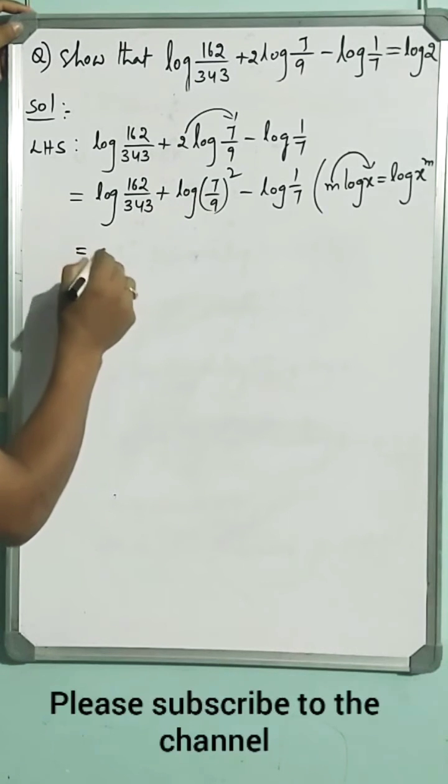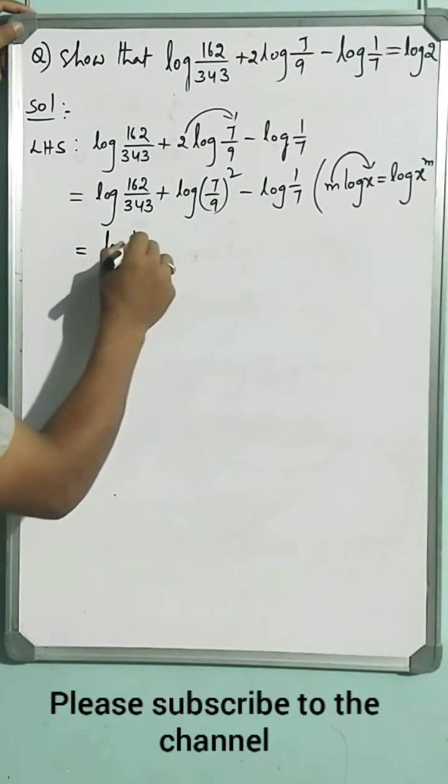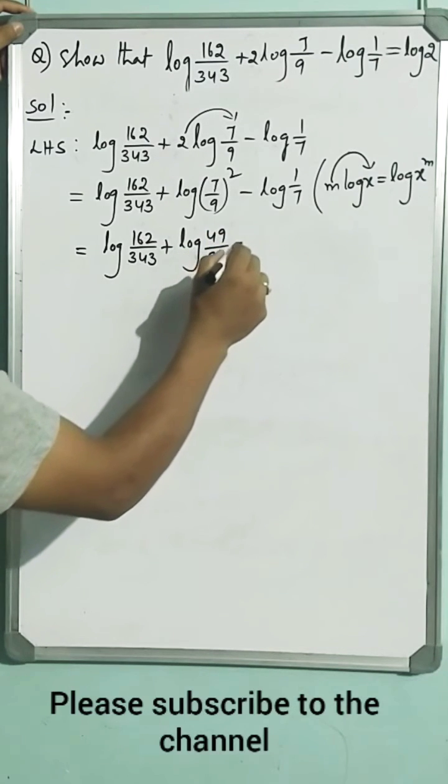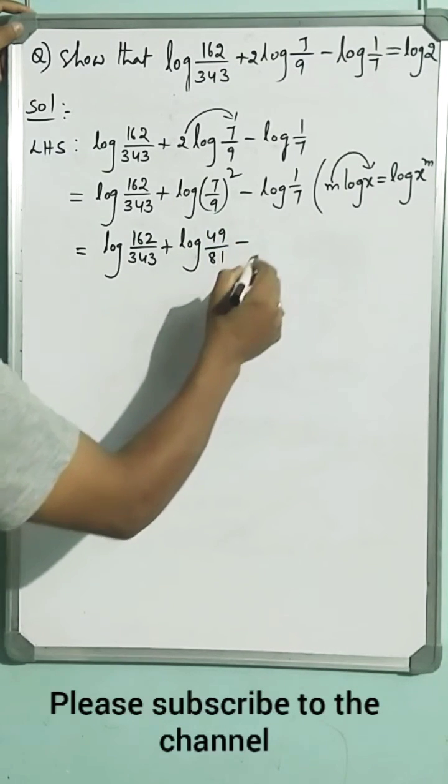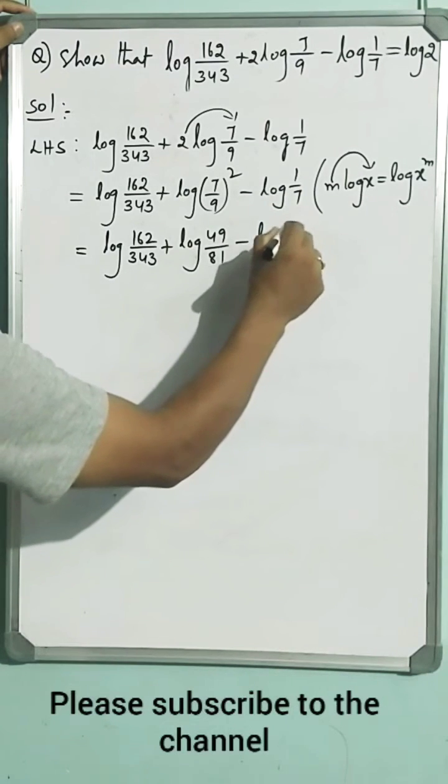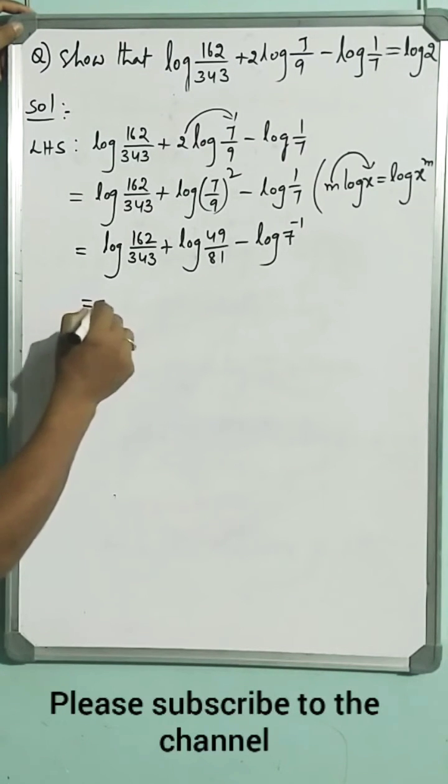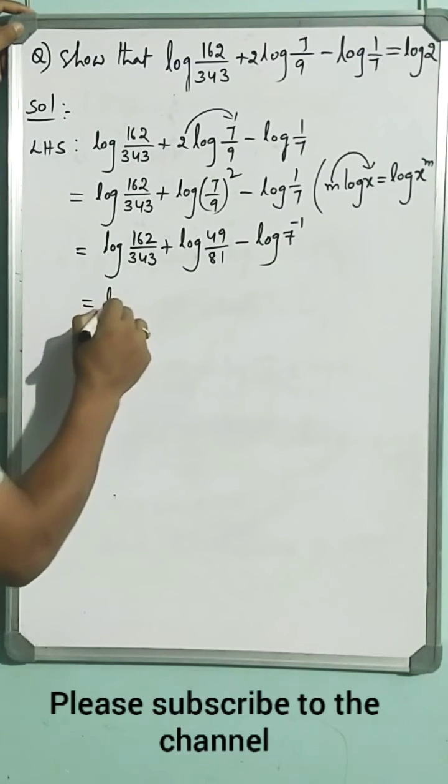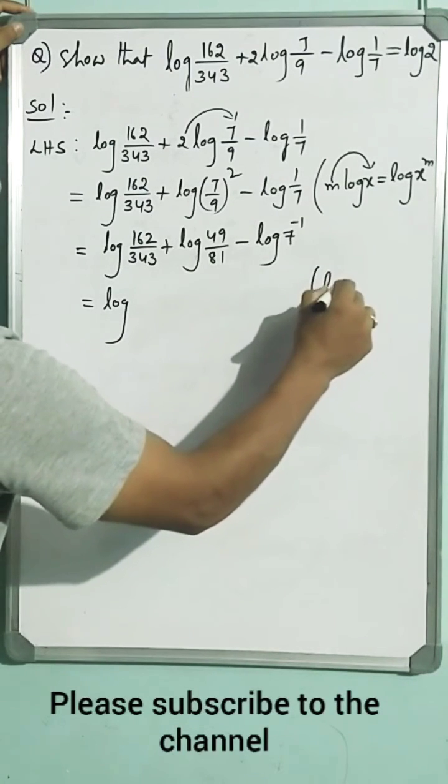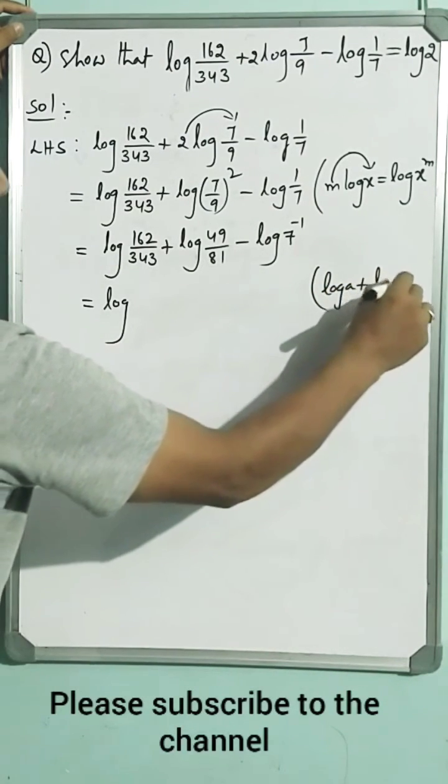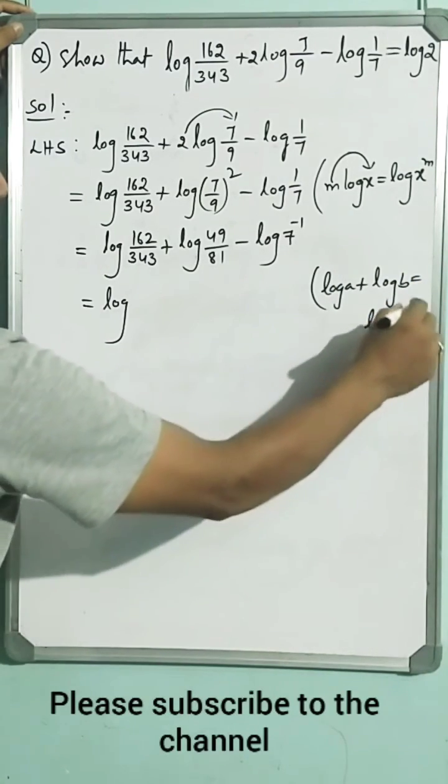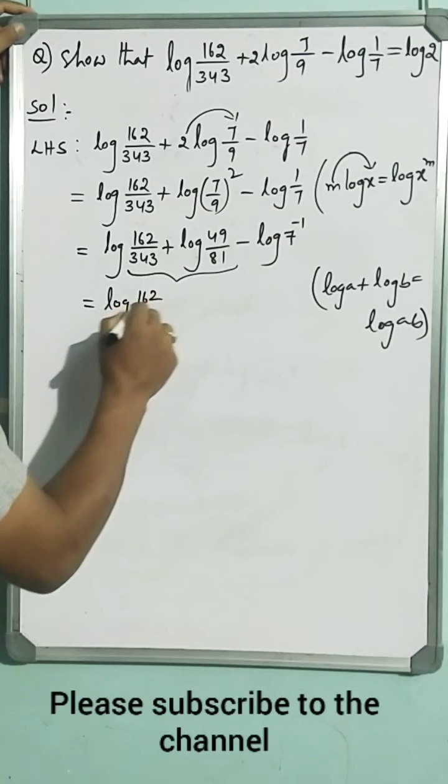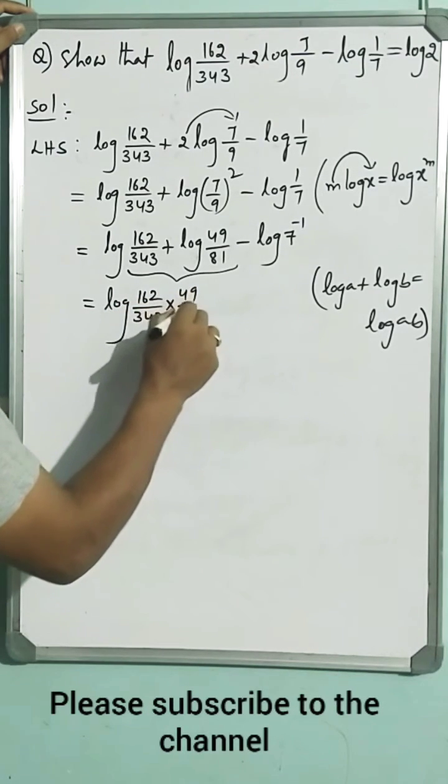Next we apply the square to the fraction: log 162 by 343 plus log 49 by 81 minus, you can write 1 by 7 as 7 inverse. Then log A plus log B can be written as log AB. So by using this logarithmic law, let us combine these two: log 162 by 343 into 49 by 81.